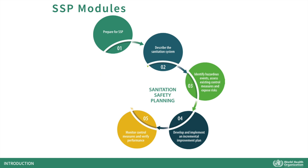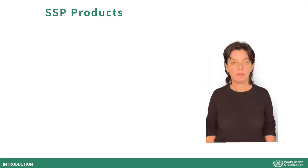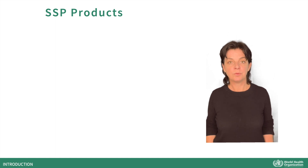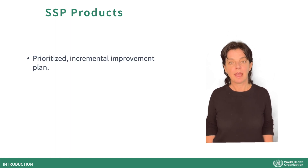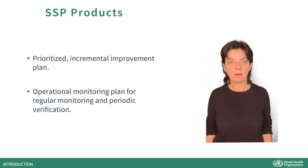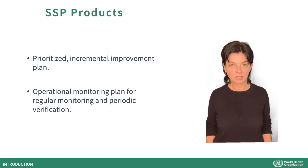Finally, in Module 6, we develop supporting programs and evaluate the effectiveness of our SSP. Carrying out the SSP process will result in two products: a prioritised incremental improvement plan, and an operational monitoring plan for regular monitoring and periodic verification.